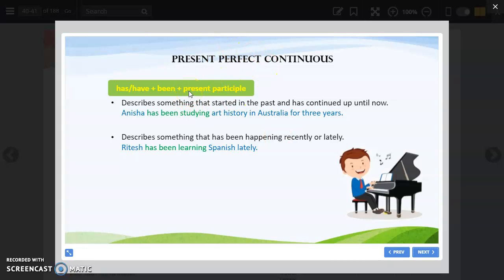This will have -ing. Has or have been plus present participle. It describes action that started in the past but is still continuing till now, or it describes something that has been happening recently or lately. Anisha has been studying art history in Australia for three years. She has been studying since then. Ritesh has been learning Spanish lately. He is learning Spanish. So if we say Ritesh learns Spanish in simple present, that would be completely wrong. We would say it like this: present perfect continuous.